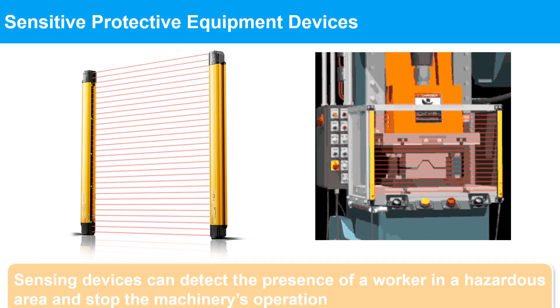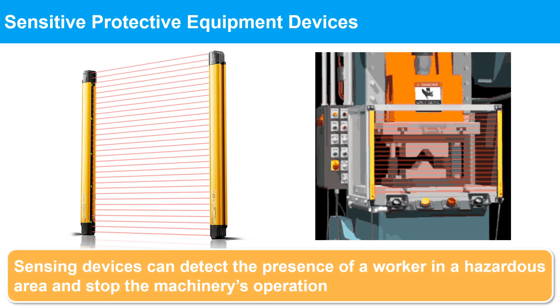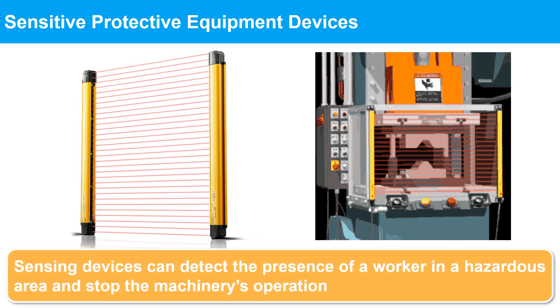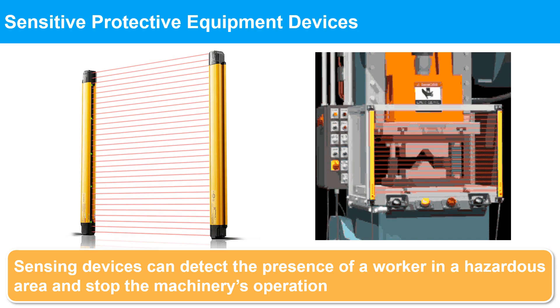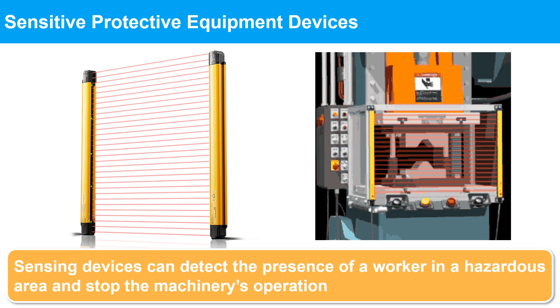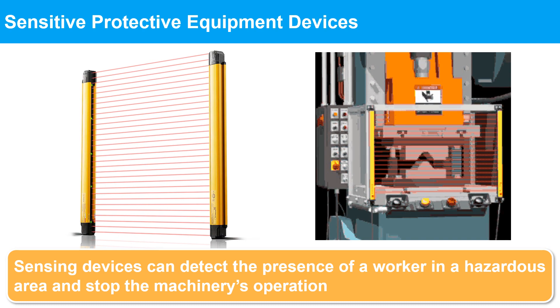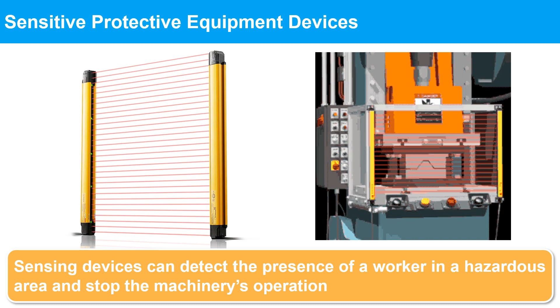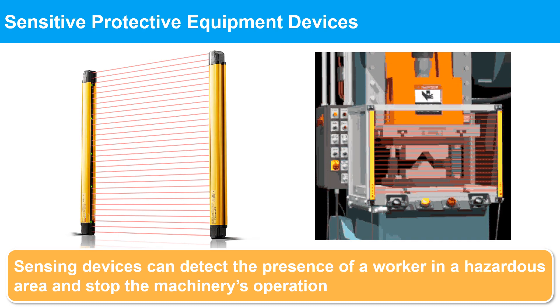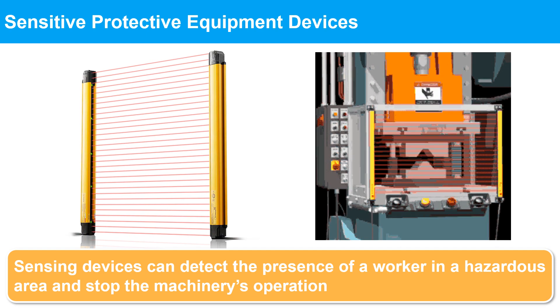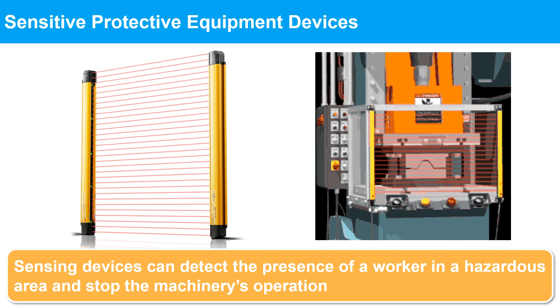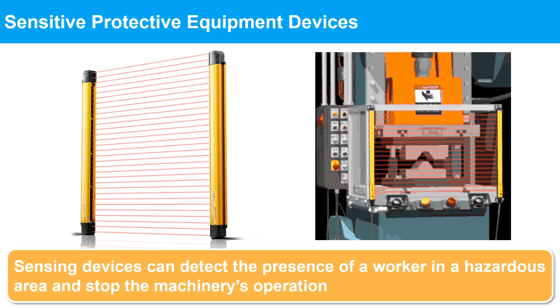Sensitive protective equipment devices: sensing devices, such as light curtains, laser scanners, and pressure-sensitive mats, can detect the presence of a worker in a hazardous area and stop the machinery's operation.